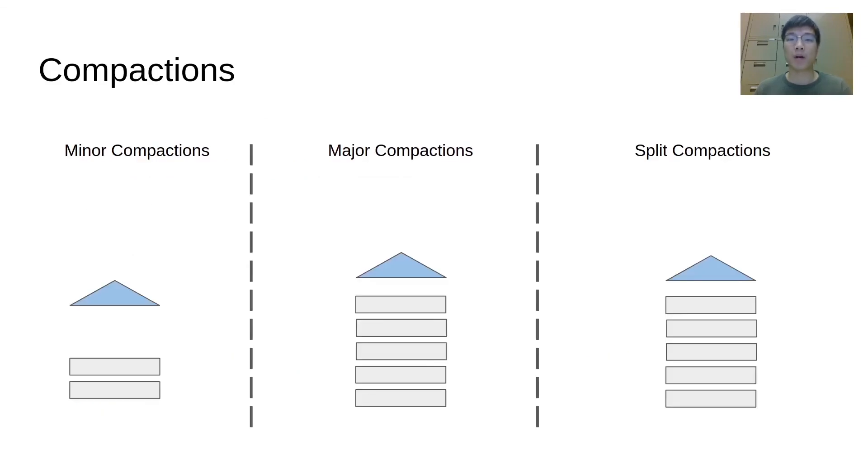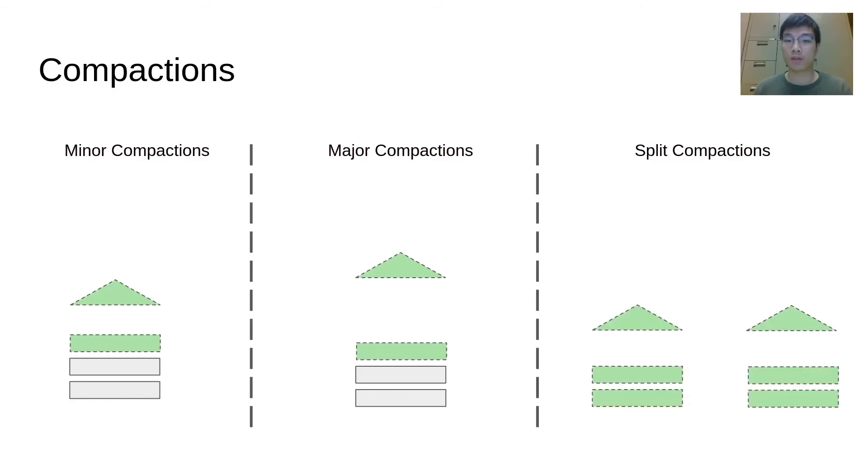In each partition, three types of compaction are possible depending on the new data size and the old data size. A minor compaction directly places new table files on top of the old table files. A major compaction selects several similar-sized table files and compacts them into one. A split compaction divides a large partition into multiple new partitions.